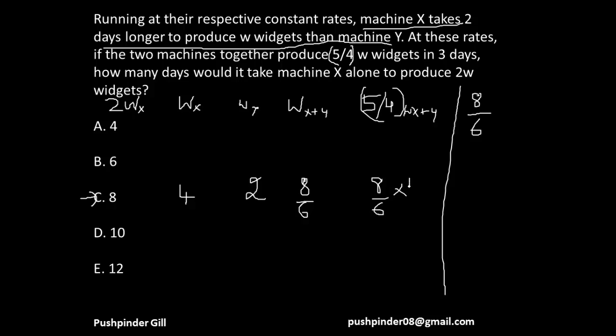So to produce 5/4 W widgets, X and Y are going to take—if they're taking 8/6 days to produce W widgets, to produce 5/4 widgets they're gonna take 5/4 more days because they're directly proportional. So from that we get our answer to be, if we just reduce all the things, this goes to 2, this goes to 3, so it's 5/3. Now if you see, this is 1.9 something. So if 8 is not able to give me a 3 here...